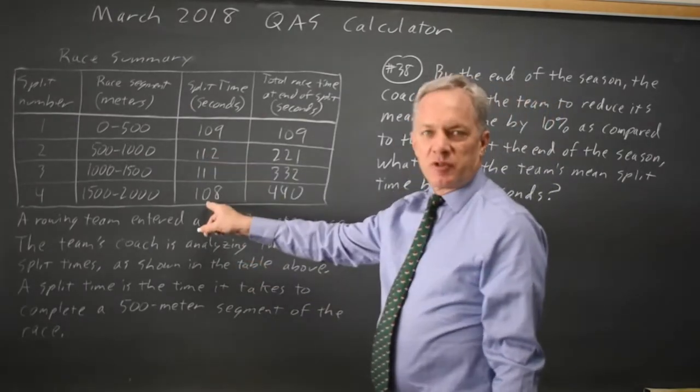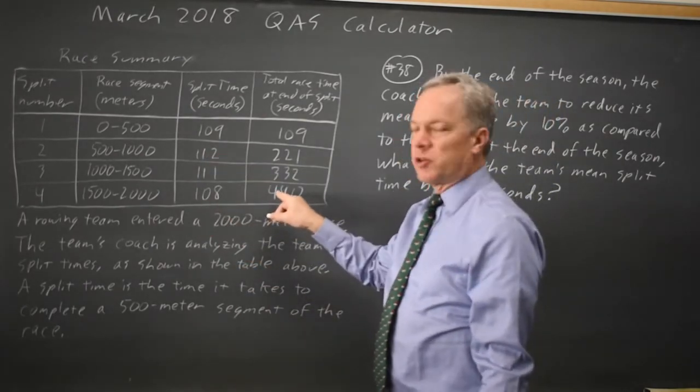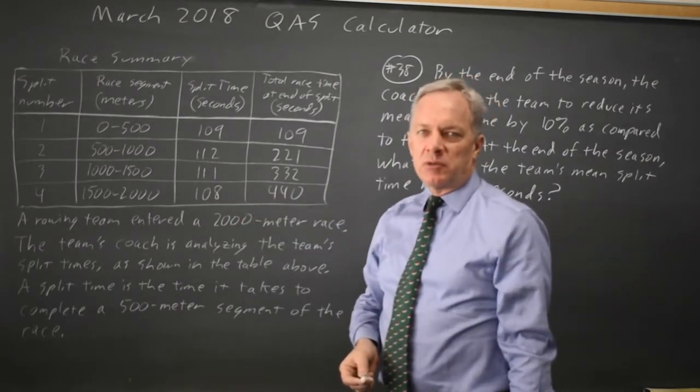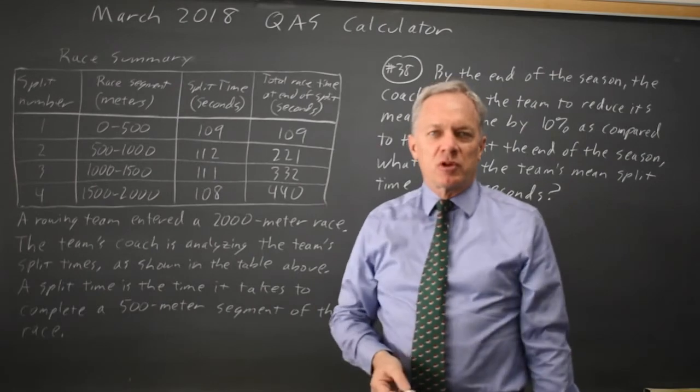I can add these up and divide by 4 or I can observe that the total time is the sum of those. The total time is 440. The mean time would be 440 over 4 which is 110.